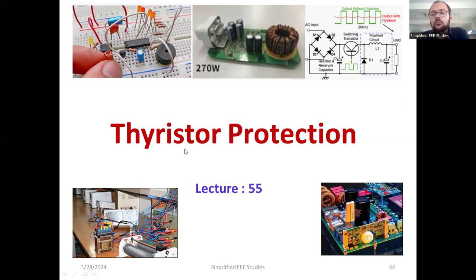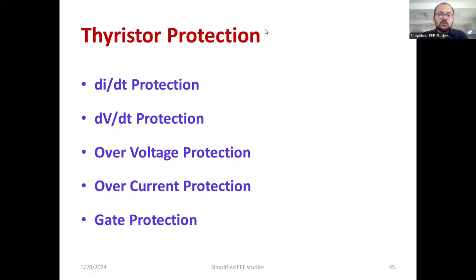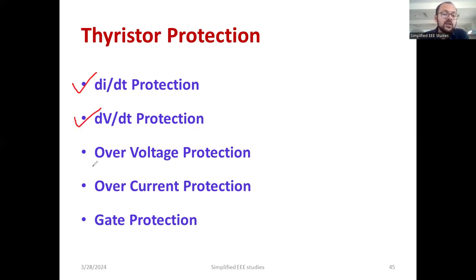What are the different types of thyristor protection? We have a few types of thyristor protection which are readily available. There are many more, but I will be discussing the most important thyristor protections: DI by DT protection, DV by DT protection, over-voltage protection, over-current protection, and finally gate protection.